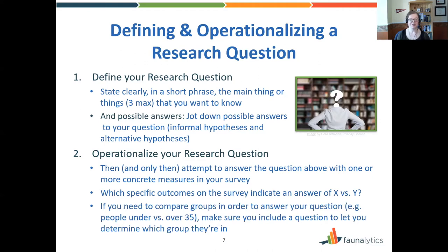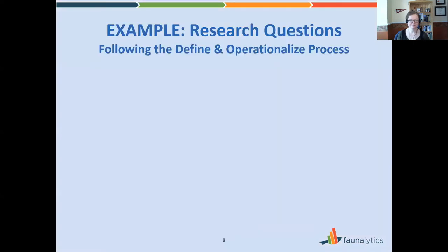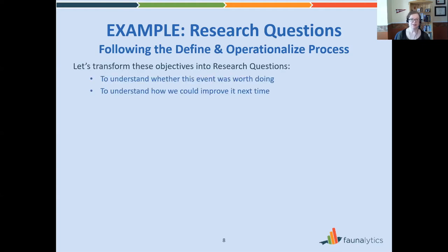Finally, if you need to compare groups to answer your research question — for instance, whether there's a difference between people who are under or over 35 — make sure you include a question that lets you determine which group they're in. Let's turn to an example. If we follow the defining and operationalizing process, let's take those objectives we had before and turn them into research questions instead. Feel free to pause and try this yourself.